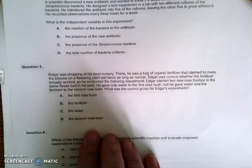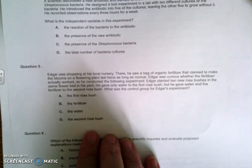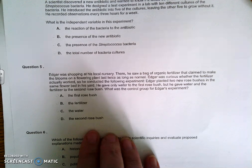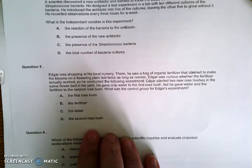And the answer for number five is A, the first rose bush. The explanation for that: the control group is the experimental group which does not have the variable applied to it. In this case, the first rose bush is the control group because it was given water only. The second rose bush was the experimental group because it was given water and the variable. In this case, the fertilizer.